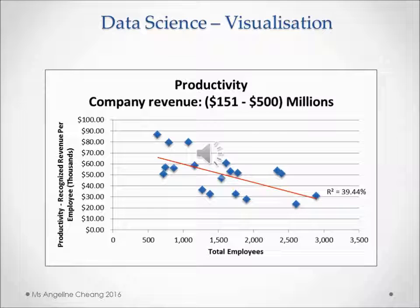Here is a simple example of the visualization of two data variables: productivity as recognized revenue per employee using a thousand-dollar scale, and the increasing number of employees as a company grows. What insights can you derive from the correlation of these two variables? That the productivity of a company drops as it increases its headcount — at a rate of 17% for every additional 500 employees. What else?